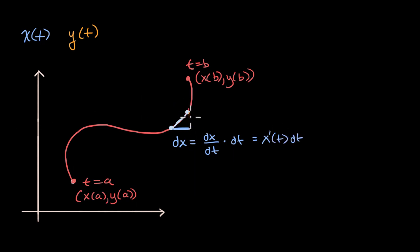And then our change in y is going to be the same idea. Our change in y, our infinitesimally small change in y, when we have an infinitesimally small change in t, well, you could view that as your rate of change of y with respect to t, times your change in t, your very small change in t, which is going to be equal to, we could write that as y prime of t dt.